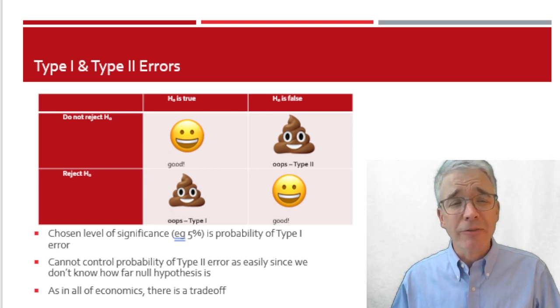When we set up a hypothesis test, we can choose the level of significance. That's the probability of making a type 1 error. That's where the choice of, like, 5% comes from. We can control that part. We cannot control the probability of type 2 error because that depends on how close is the null hypothesis to being true.